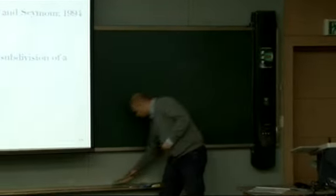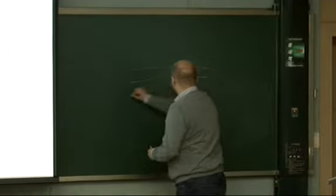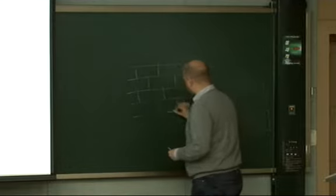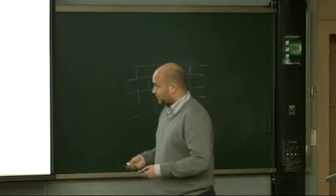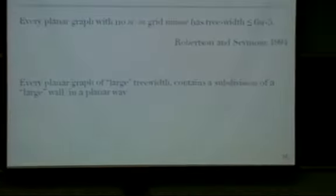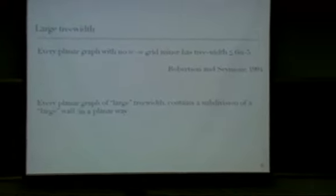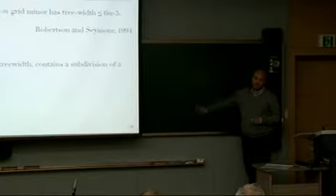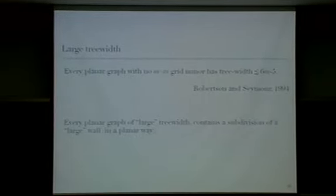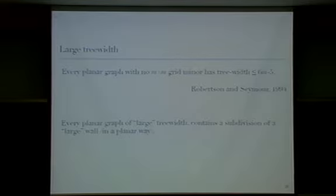We are going to work with walls. The wall is a certain graph structure. If the treewidth is big, you can find a grid minor, and in the grid minor you can find a subdivision of a big wall in a planar way. So there's a disk such that whatever lives inside contains a subdivision of a big wall. Walls are useful because they give us connectivity, and we use the infrastructure of the wall to reroute certain paths.